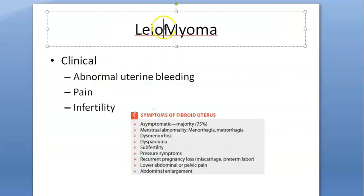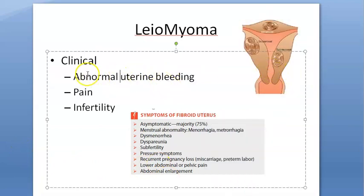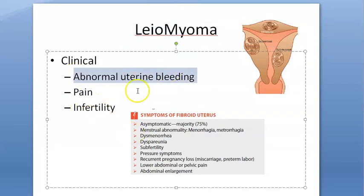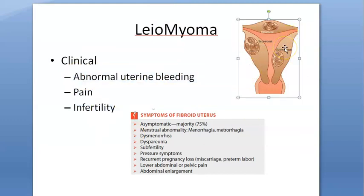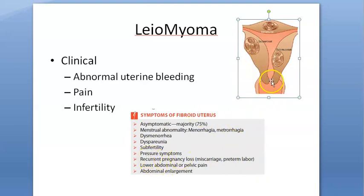Clinical features of leiomyoma: they can be asymptomatic. They can have abnormal uterine bleeding. Imagine these kinds of growths — the uterus will try to push them out, so there will be pain. There will be a lot of bleeding and infertility, as it won't allow anything else to settle and grow. These people will also have recurrent pregnancy losses, abdominal pain, pelvic pain, abdominal enlargement, pressure symptoms, and dyspareunia — pain during intercourse.